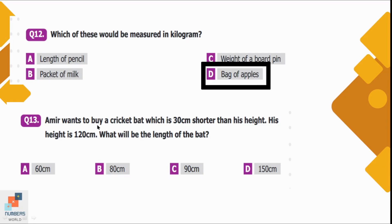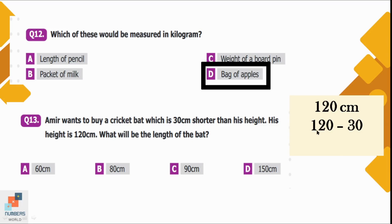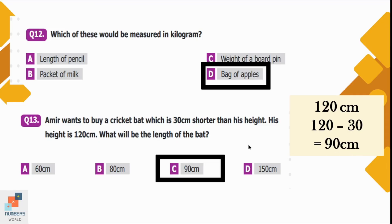Question number 13: Amir wants to buy a cricket bat which is 30 centimeters shorter than his height. His height is 120 centimeters. What will be the length of the bat? Amir's height is 120 centimeters and the bat is 30 centimeters shorter, so we subtract 30 from 120, which equals 90 centimeters. The length of the bat is 90 centimeters. Option C is correct.